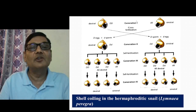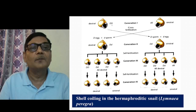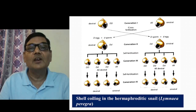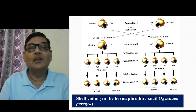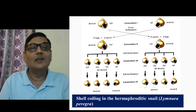Now we can understand how the inheritance of this shell coiling takes place. Suppose these are two snails — one is dextral, the other one is sinistral — and these two are being crossed with each other. This dextral type is a pure dextral; its nuclear genes contain allele capital D capital D, so it is homozygous dominant. The sinistral one is a recessive type whose nuclear gene contains two recessive alleles: small d small d.